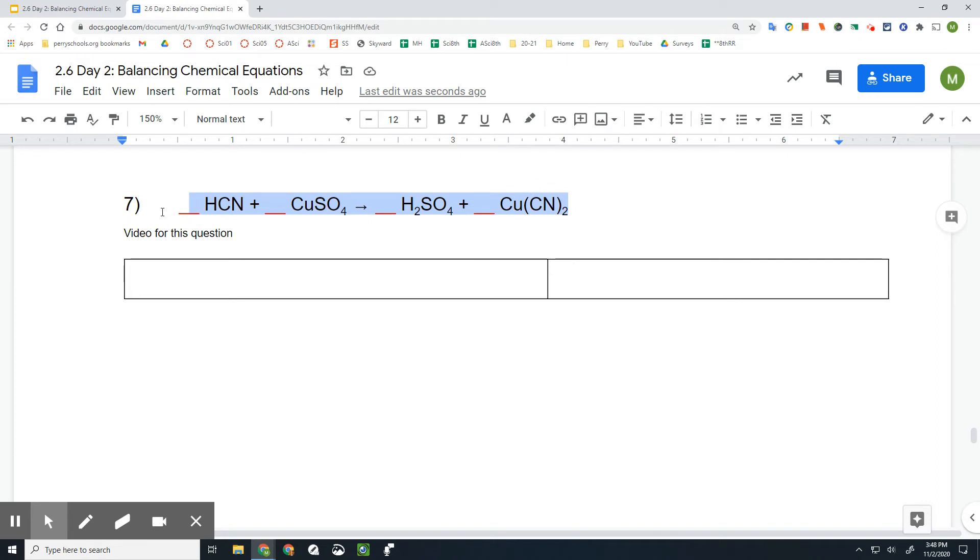Next we need to count the number of elements on each side. It looks like the CN here shows up on both sides, and so does the SO₄, it shows up on both sides. That's going to be good for us to know.